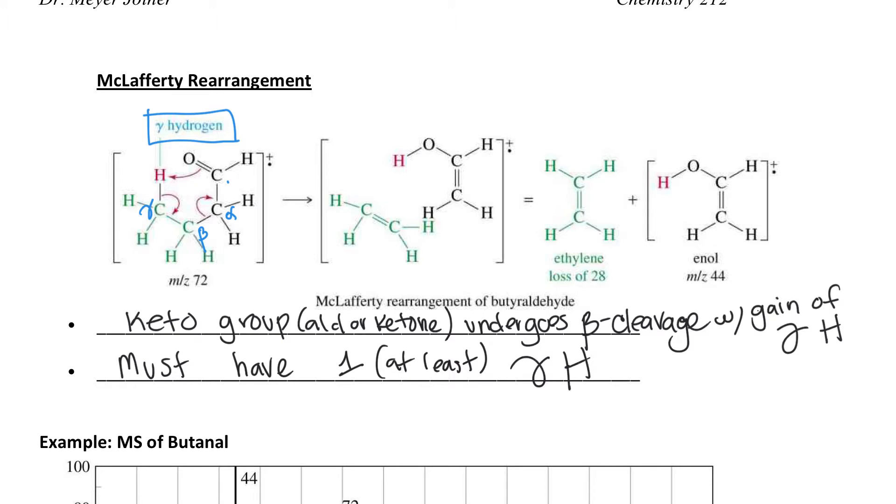If you have a gamma carbon and it has a gamma H on it, notice how it would originally look linear. This is butanal, also known as butyraldehyde. You would normally draw it like that, but you can twist it around so that when you bend this one up, you see that there's a six-member transition state as you push these arrows. Notice that if we do a cleavage at the beta position, that means right here, those arrows are showing that the alpha-beta bond is breaking.